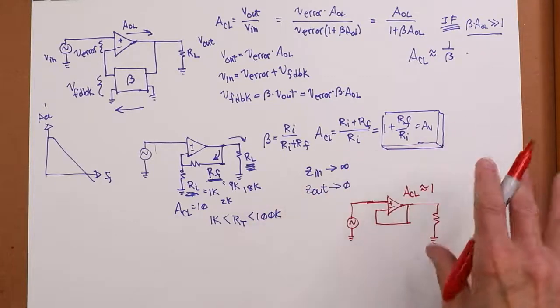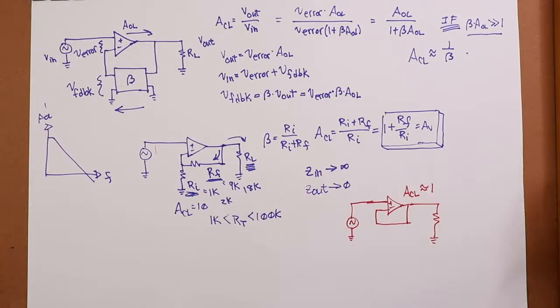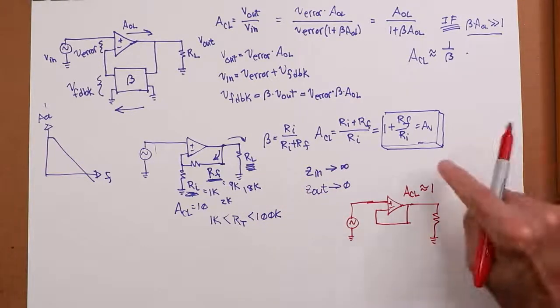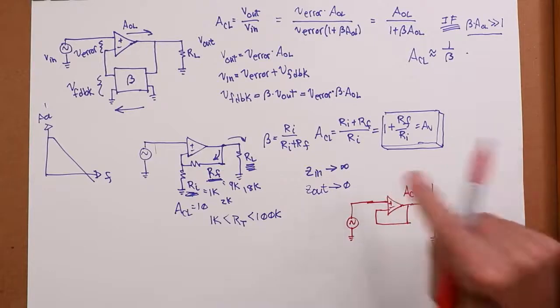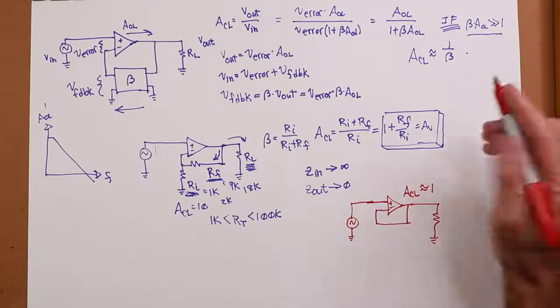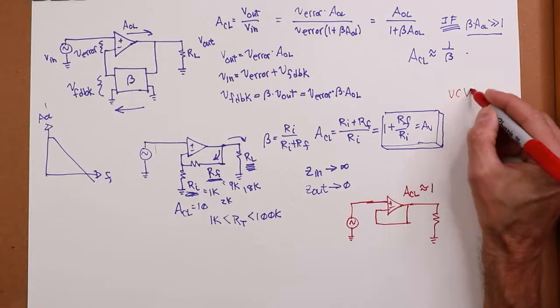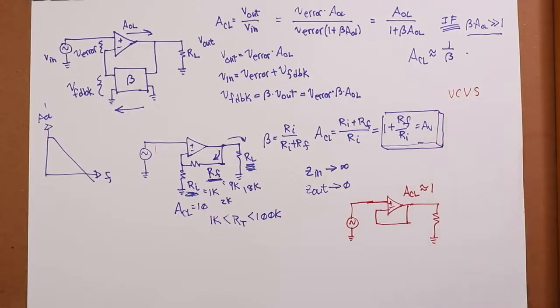That covers the basics for our series parallel negative feedback. Ideal voltage amplifier. Voltage controlled voltage source. You're going to see that again. Voltage controlled voltage source. Okay. Take a break.